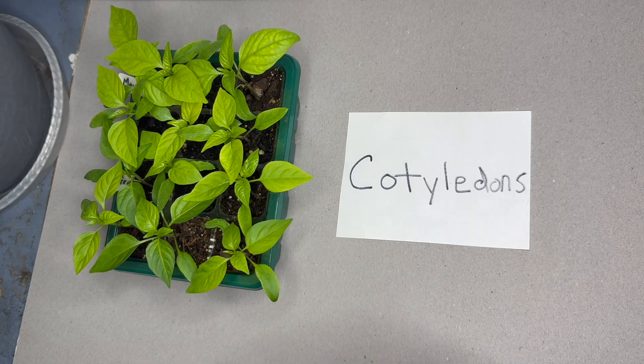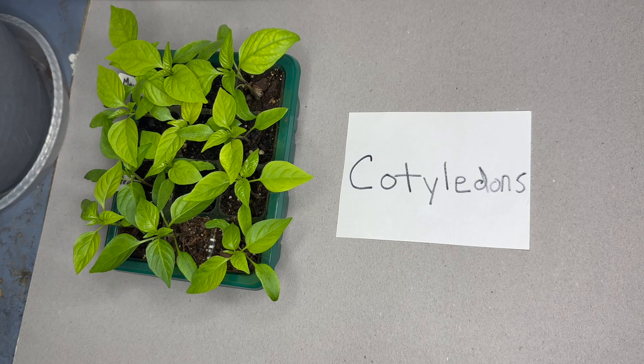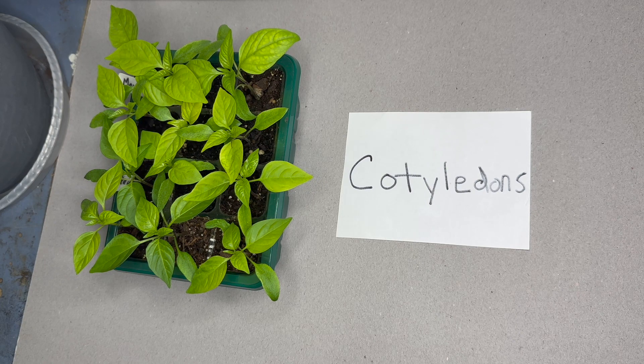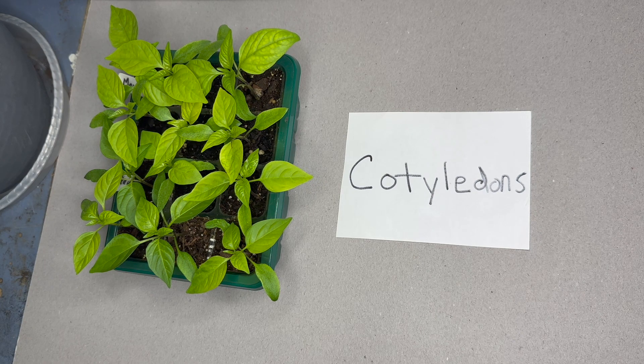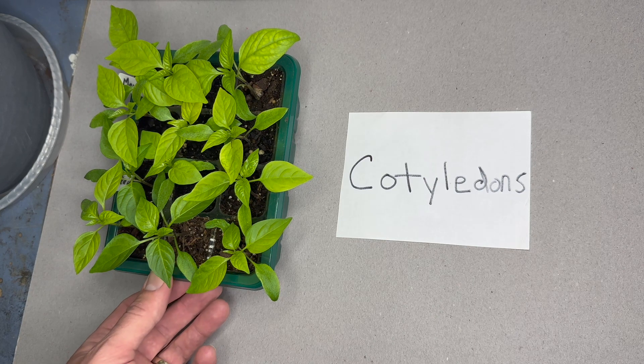as they get bigger and need to repot them into a three and a half inch pot, a very good rule of thumb is you should have at least two sets of true leaves on that plant. So in order to know if you have two sets, it's good to understand what the true first leaves are.